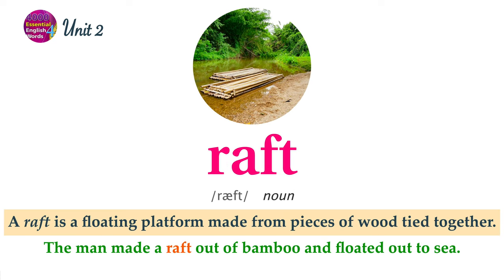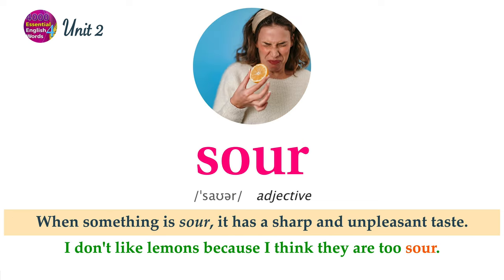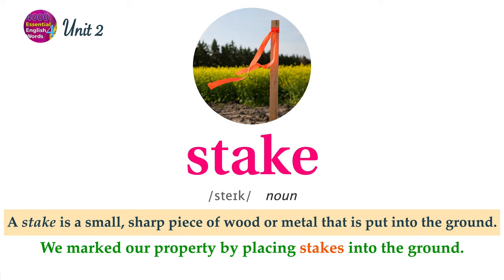A raft is a floating platform made from pieces of wood tied together. The man made a raft out of bamboo and floated out to sea. When something is sour, it has a sharp and unpleasant taste. I don't like lemons because I think they are too sour. A stake is a small, sharp piece of wood or metal that is put into the ground. We marked our property by placing stakes into the ground.